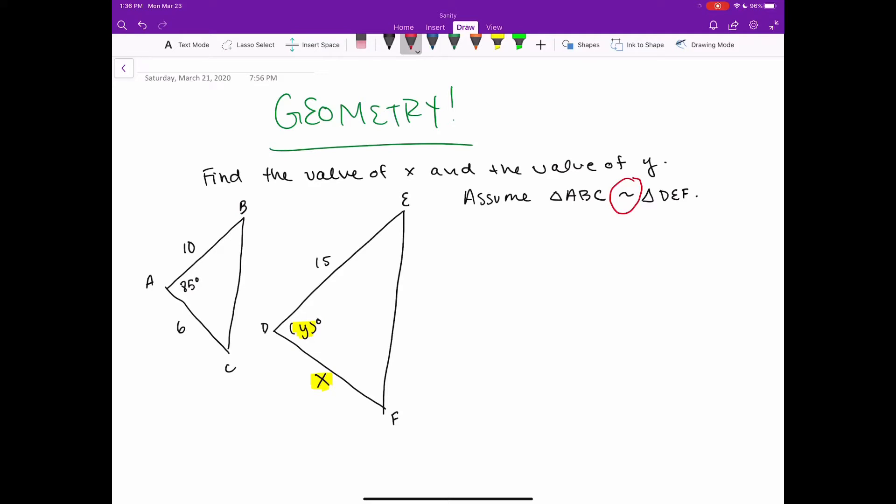Again, we have that little squiggly line which we talked about indicates similar figures. There are a couple things we know about similar figures. I'm going to highlight one, that all of the corresponding angles in similar figures are congruent.